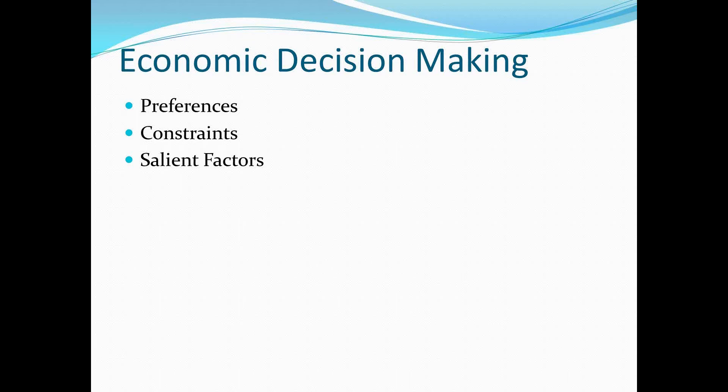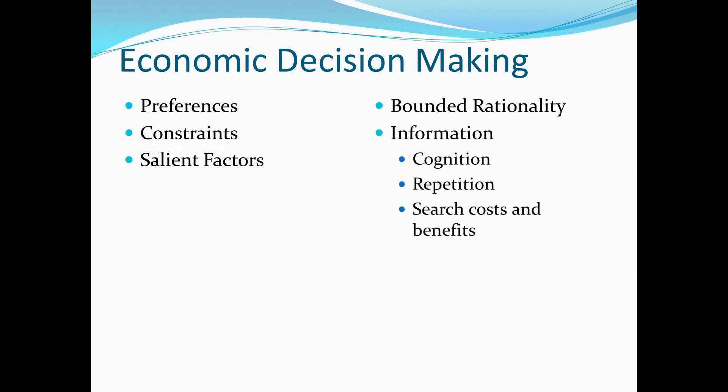You decide, you look into a situation, and you decide what's salient, and go from there. If you're off — if actually what's important is not seen by you — errors can be made. And this is why bounded rationality is really important to think about. And how bounded rationality interacts with your learning, this information, the cognition, repetition, and what it takes to search and receive benefits.